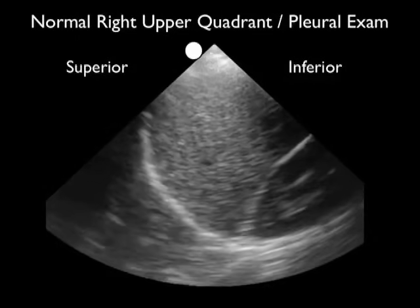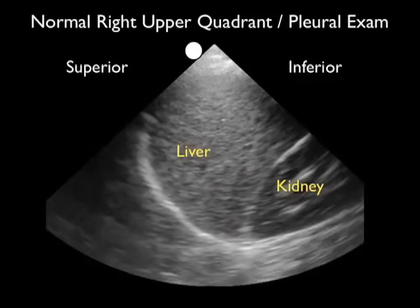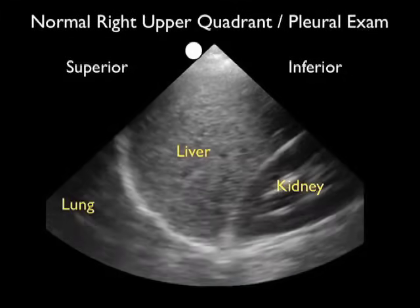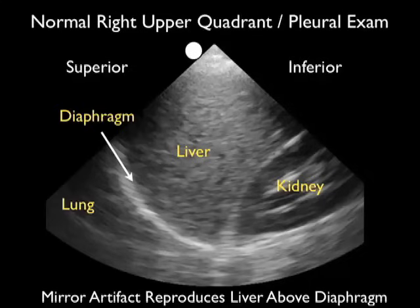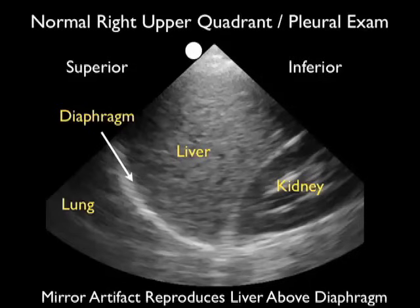Now let's take a look at a normal right upper quadrant pleural examination. The probe is configured in a long axis orientation with the marker towards the patient's head, so superior is to the left and inferior to the right. The liver is in the middle of the image. Above the liver we see the diaphragm, that curving white line which is moving up and down as the patient breathes. Superior to the diaphragm is the thoracic cavity. What we see there is something called mirror artifact — this occurs as sound waves pass through the diaphragm and reproduce what looks like a mirror image of the liver within the chest. This is a normal appearance, and notice the absence of a dark or anechoic fluid collection within the right chest.